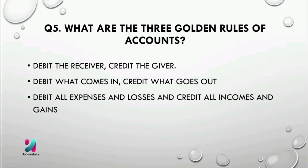The next question is: what are the three golden rules of accounts? The three golden rules of accounts are: debit the receiver, credit the giver; debit what comes in, credit what goes out; debit all expenses and losses, and credit all incomes and gains.